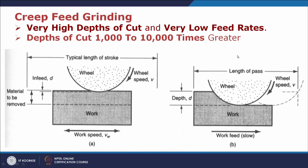Creep feed is another grinding process wherein very high depth of cut and very low feed rates are used. Depth of cut can be as high as 1000 to 10000 times greater than what is used in conventional grinding processes. Schematically, in conventional grinding the in-feed or depth of cut is very little, while for creep feed grinding the depth of cut is very high but the translational speed or feed rate is extremely low — proportionally reduced by the same factor as the increase in depth of cut.